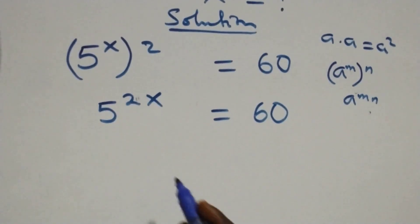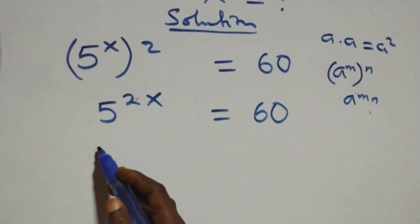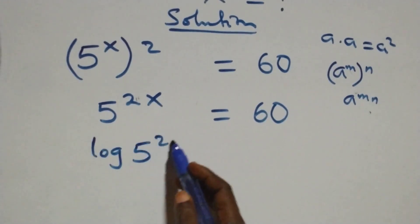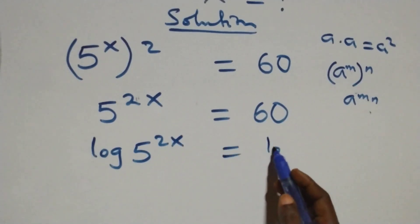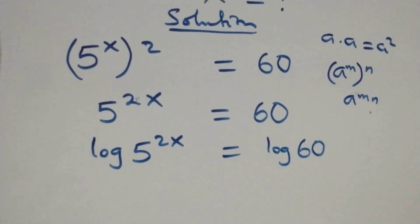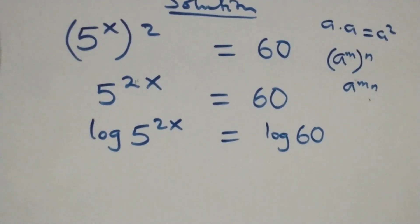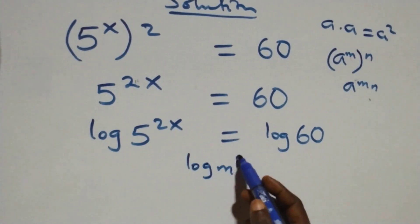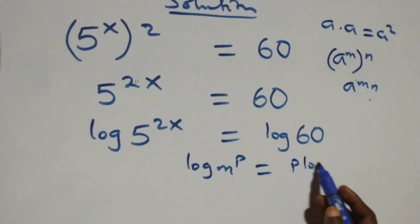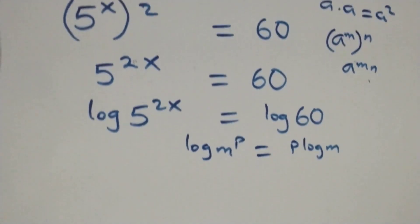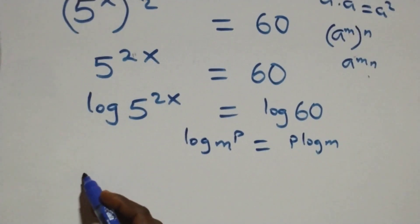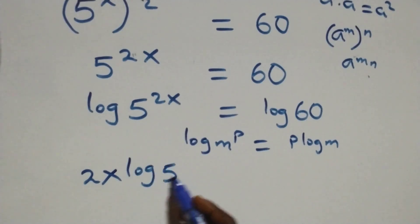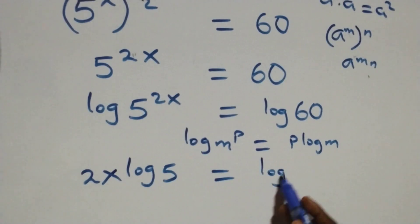The next step: we take the log on both sides, giving log of five raised to the power two x equals log sixty. We then apply the power rule of logarithms, where log of m raised to power p is the same as p log m.